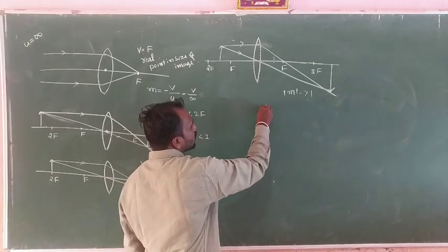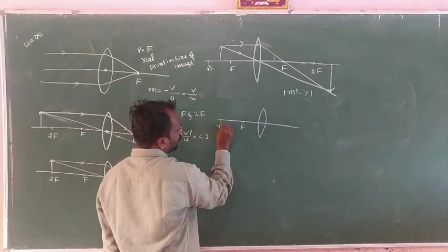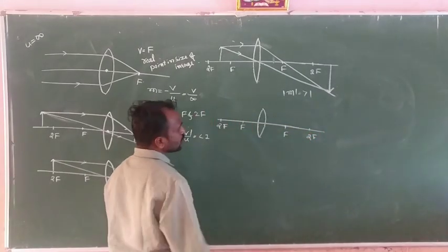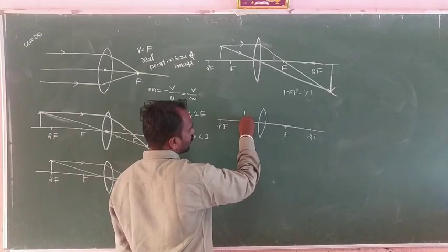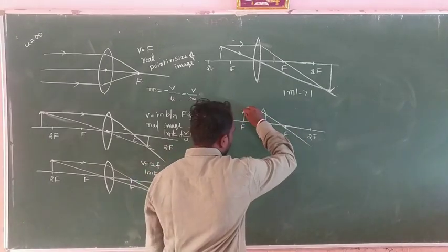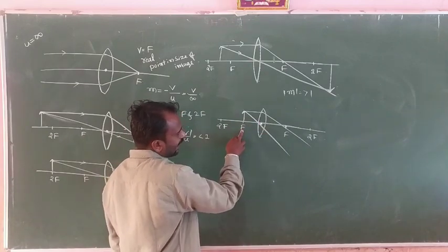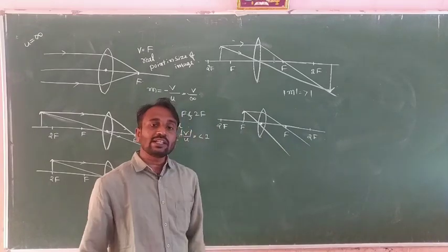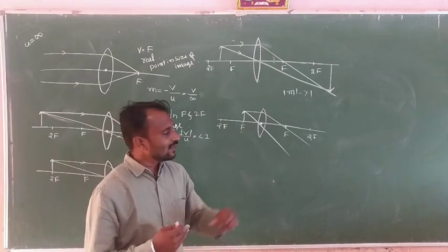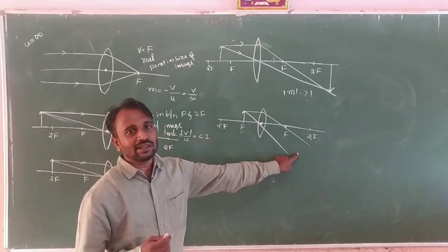Next case: object placed exactly at F. The incident ray refracts and becomes parallel, and the normal ray passes through the optic center. These rays never meet on the other side, so the image is formed at infinite distance. The image is real and inverted, and the size of the image is greater than the size of the object.